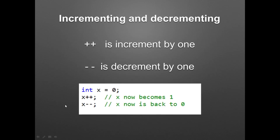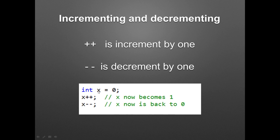The next set of operators I want to talk about is the incrementing and decrementing operators. If you double up the plus symbol, the addition operator, what that does is it takes the variable you have declared and adds one to it. So if you create int x and x is set to 0, and you do x plus plus, x now becomes 1.